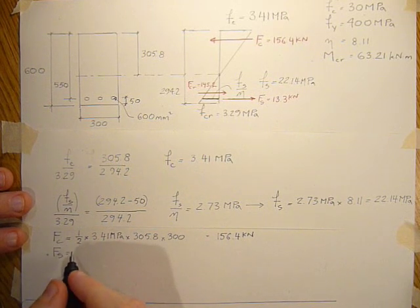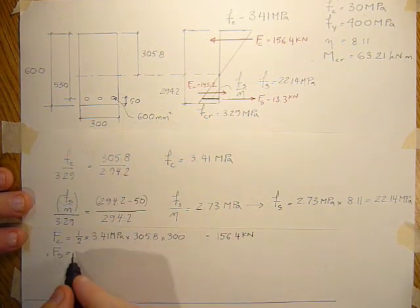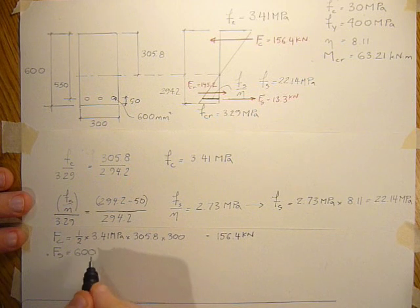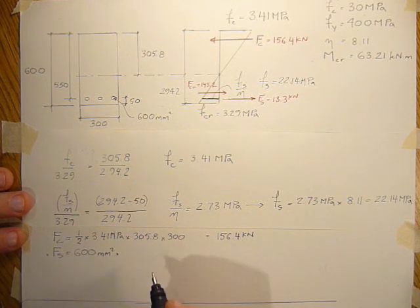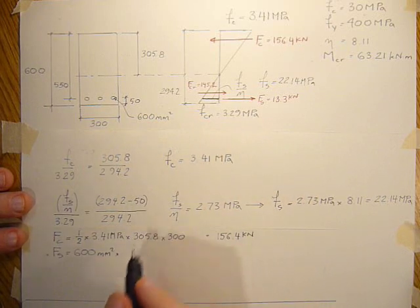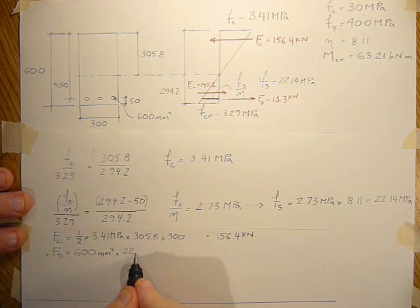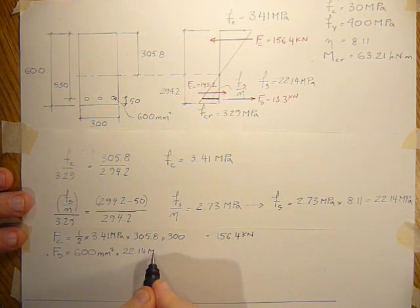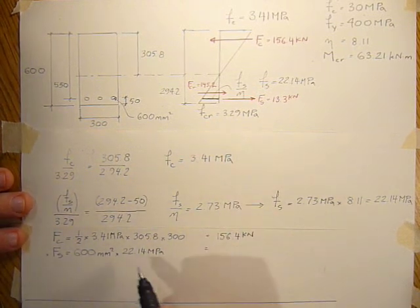So the area of the steel is 600 millimeters squared times the stress in the steel 22.14 MPa.